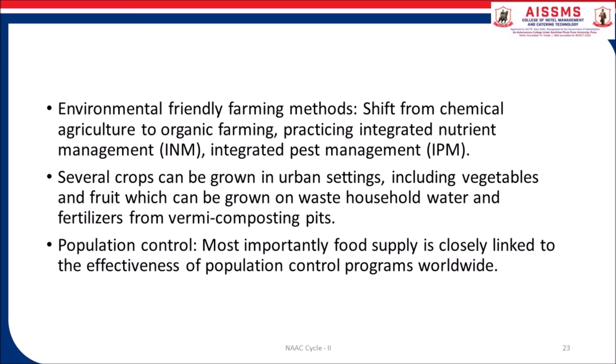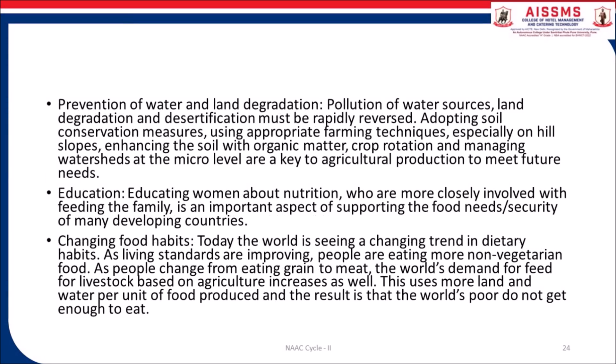Several crops can be grown in urban settings, including vegetables and fruits, which can be grown on waste household water and fertilizers from vermicompost pits. Population control — food supply is closely linked to the effectiveness of population control programs worldwide. Prevention of water and land degradation — pollution of water resources, land degradation and desertification must be rapidly reversed. Adopting soil conservation measures using appropriate farming techniques, especially on hill watersheds, are key to agricultural production to meet future needs. Education — educating women about nutrition, who are more closely involved in feeding the family, is an important part of supporting food security in many developing countries.